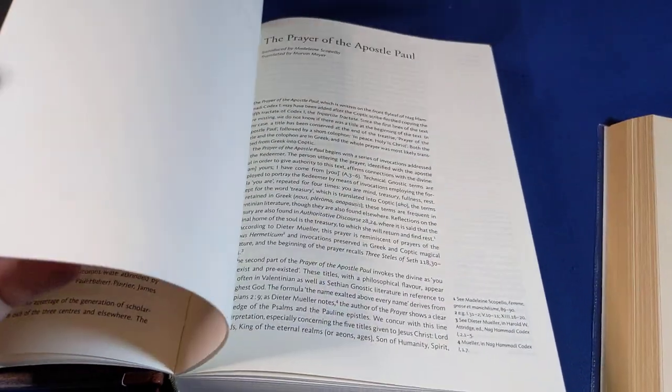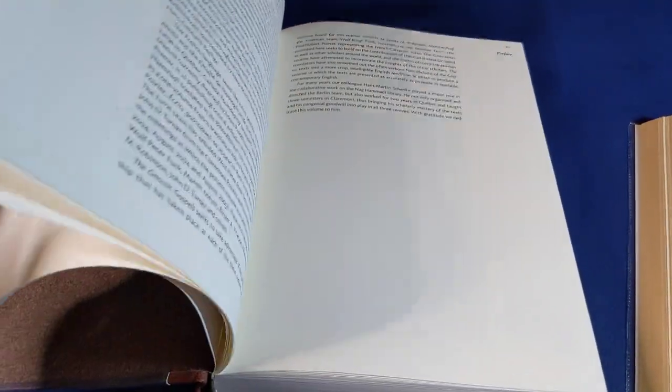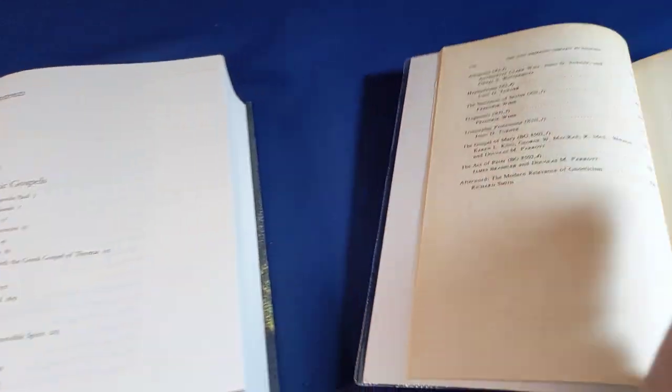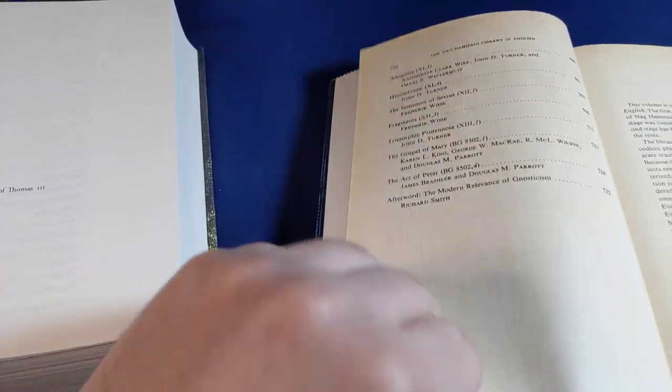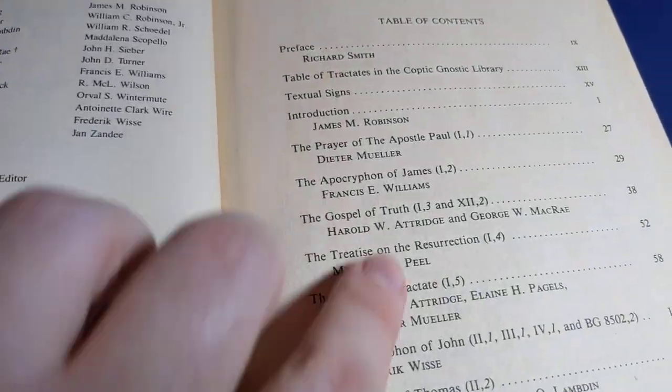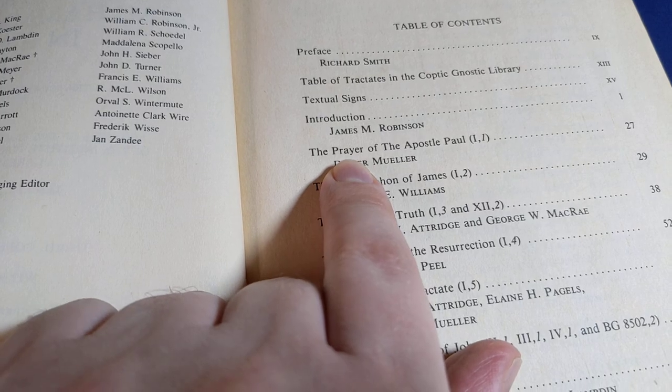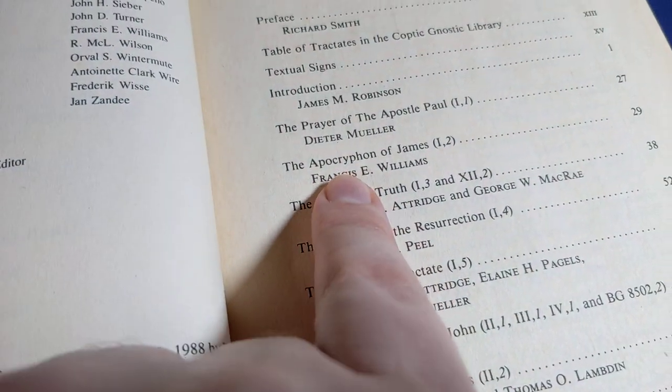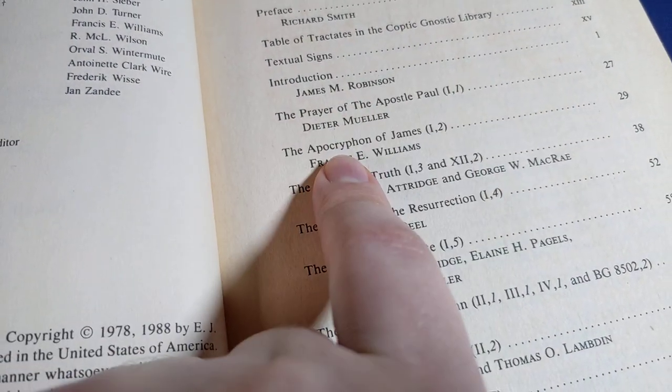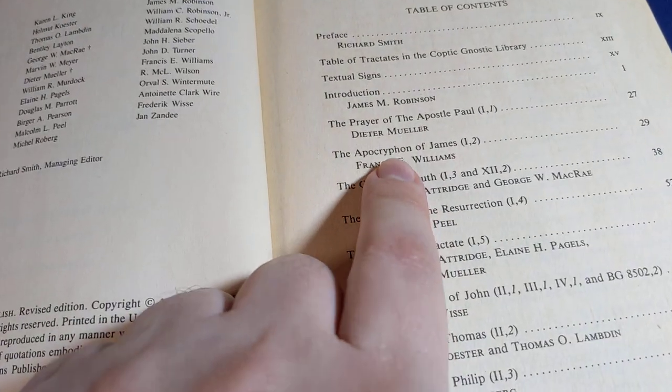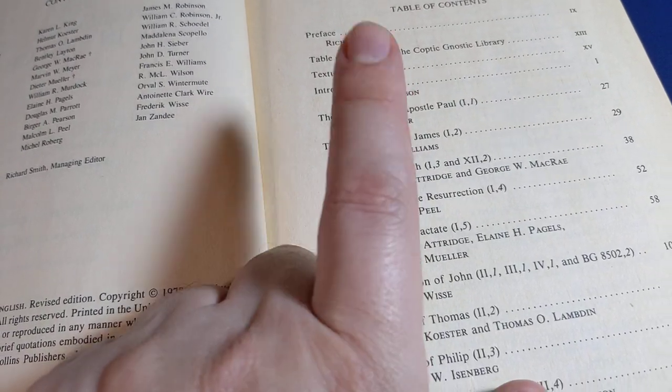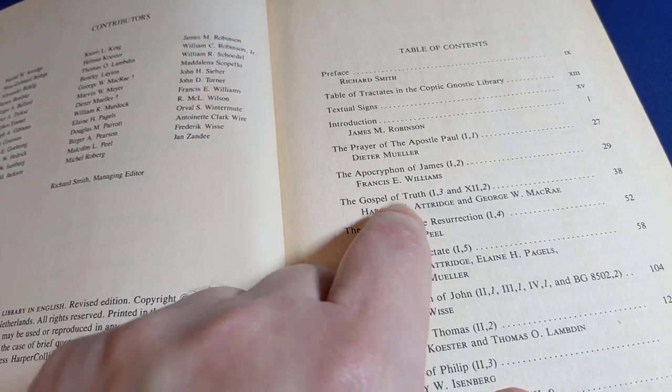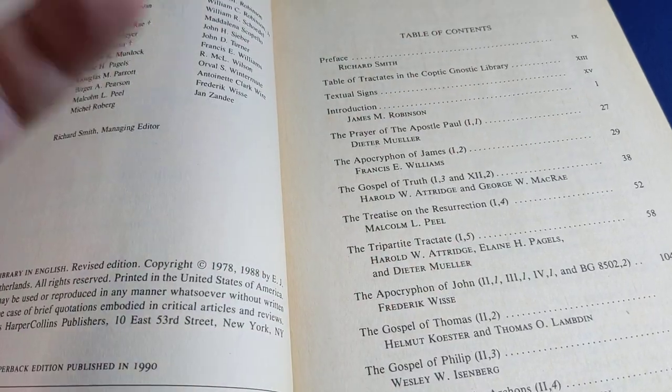Let me give you a little example of some of the translations to just give you a feel of how much easier it's going to be to read. And just by showing you some of the titles, if we go to the page of contents, the first few are identical. The Prayer of Apostle Paul, the Prayer of Apostle Paul. The Secret Book of James, the Apocryphon of James. So very often this old 1990 translation will choose Greek words, which may be obscure if you don't know Greek.